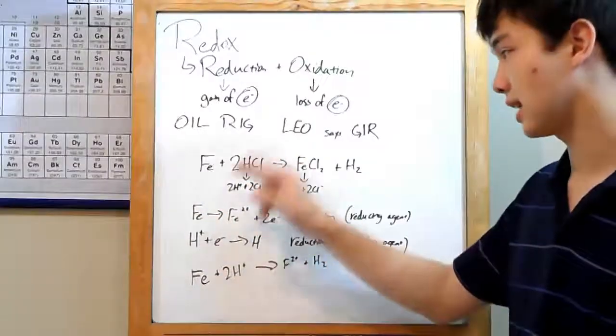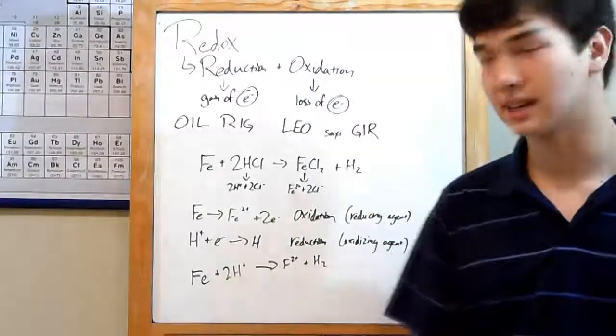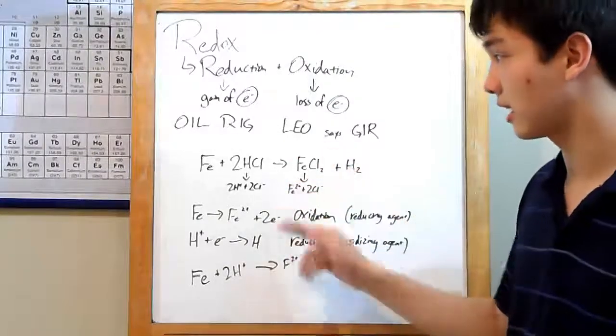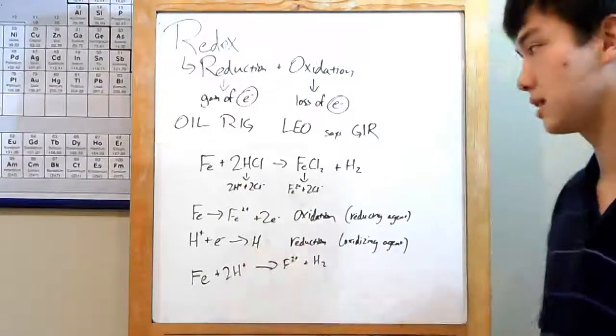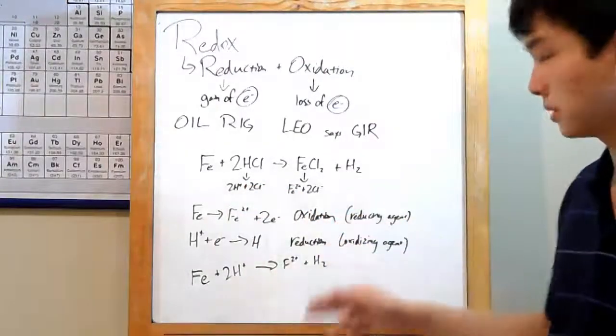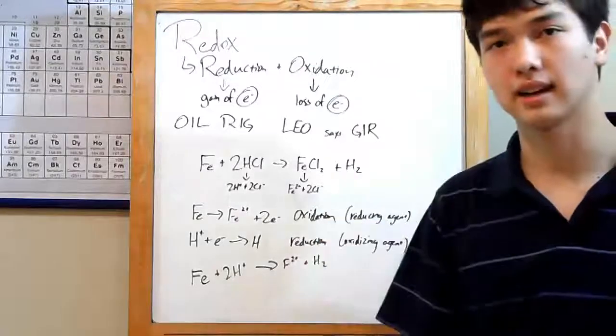So let me show this to you in a redox reaction. Fe plus 2HCl yields FeCl2 and H2. Let's break it down. Two of these compounds are ionic, HCl. That's 2H plus ions and 2Cl minus ions put together. And FeCl2, that's an Fe2 plus ion and 2Cl minus ions.